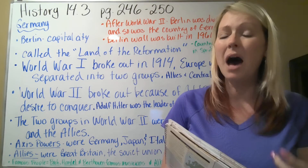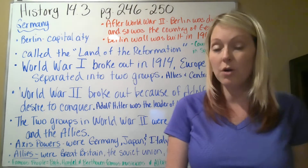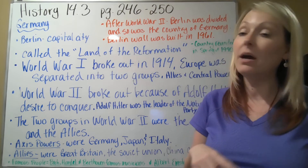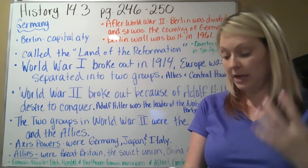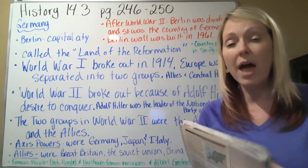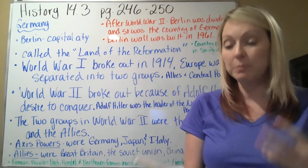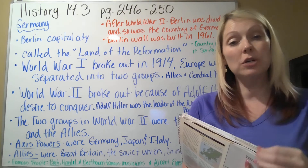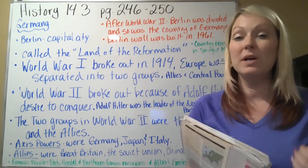After World War Two, Germany was split into two different areas: West Germany and East Germany. West Germany came under the influence of the United States, Great Britain, and France, who helped rebuild it into a successful nation. East Germany was placed under the Soviet Union, who promised the same but instead got East Germany to conform to communism, rather than being a free nation.